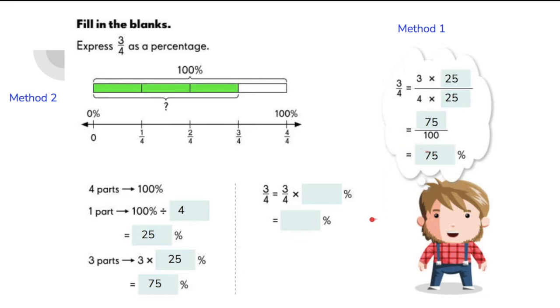Now what about the third method? This method is actually called direct calculation, which is the fastest method of solving the problem. All we need to do is to multiply 3 fourths by 100%. And to do that, we will get 75%. Where did we get this 75%?